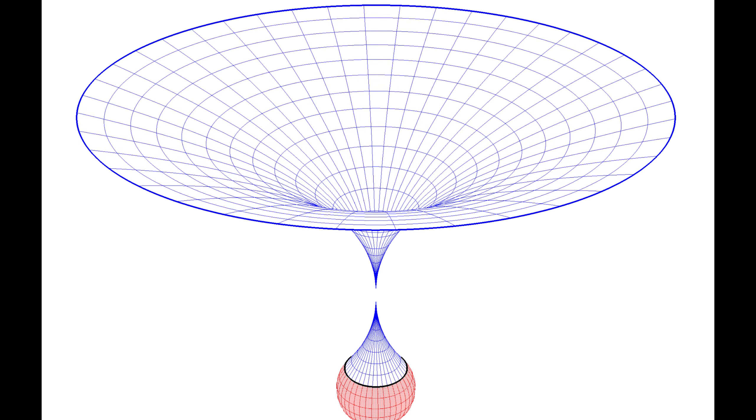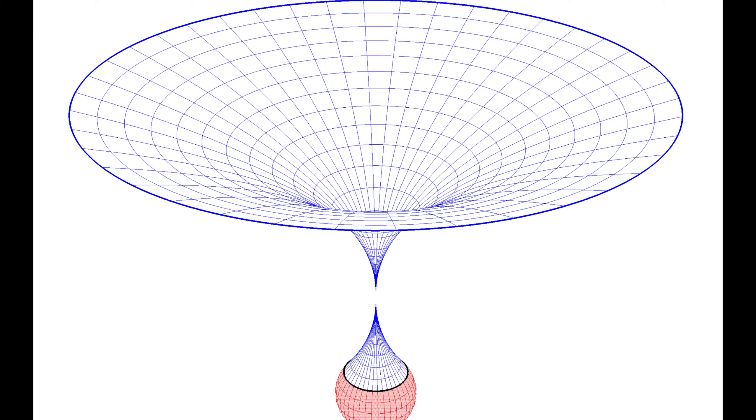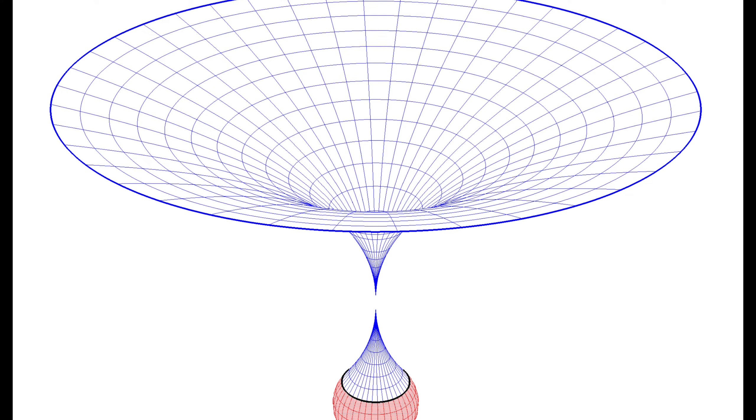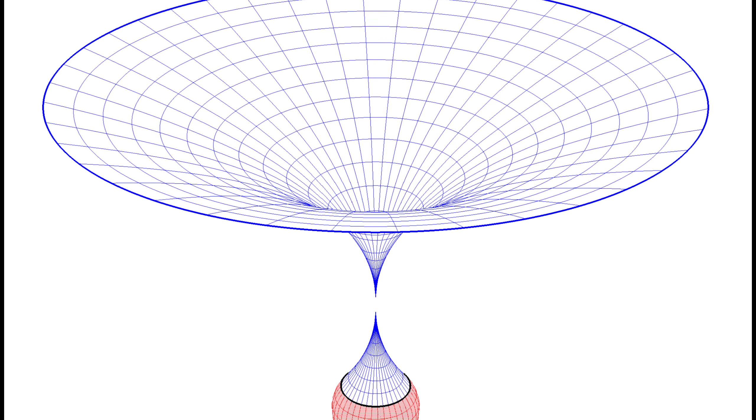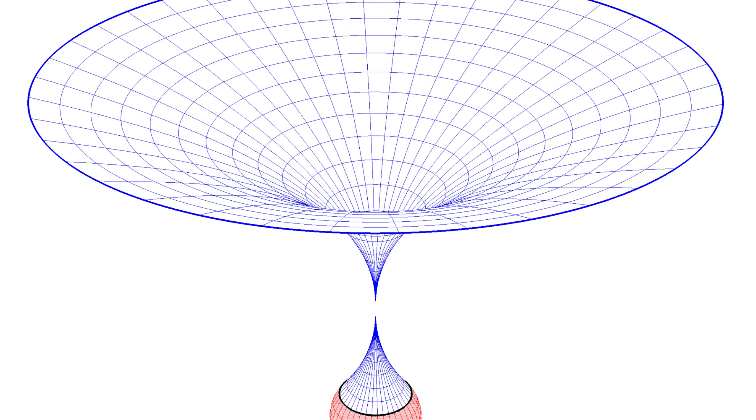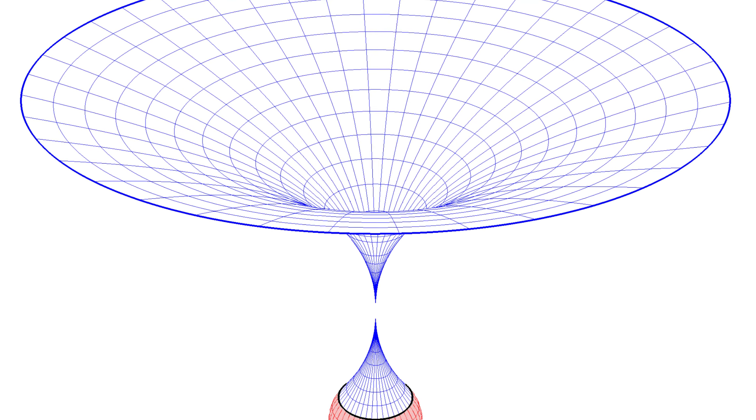General relativity describes gravity not as a force, but as the curvature of space-time caused by mass and energy. It's our best description of how large-scale structures in the universe behave, predicting phenomena like black holes and gravitational waves.